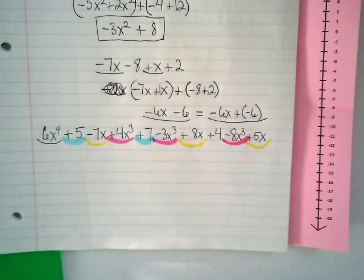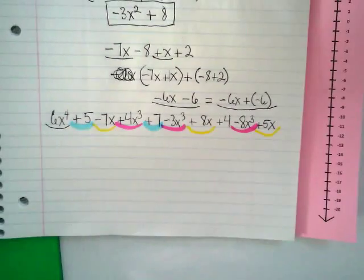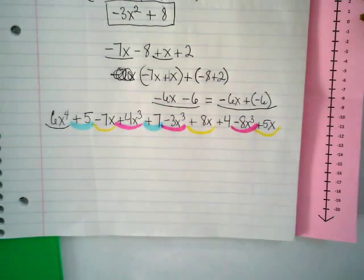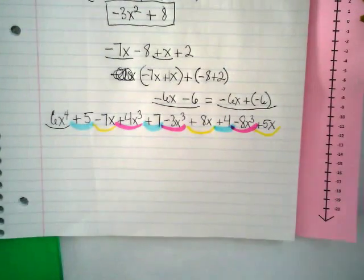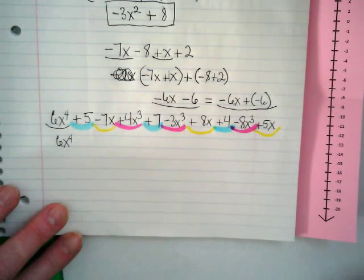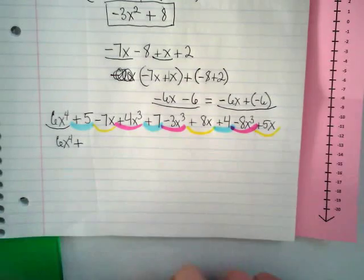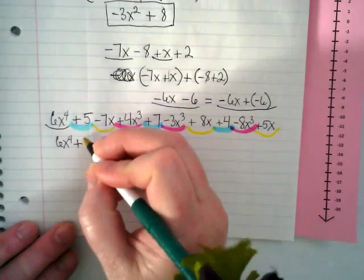We tend to write these in order from greatest to least exponent, so we put the 6x to the fourth first because it has the highest power. Do you see how color-coding has helped us? We're going to make parentheses for each set. The 6x to the fourth is all by itself — it doesn't get a parenthesis because it has no teammates. Then we do a parenthesis for the x to the third terms, because we write from the greatest exponent down to constants with no exponent.